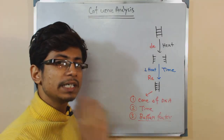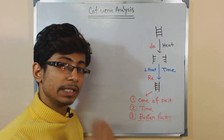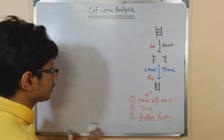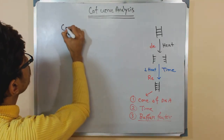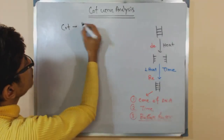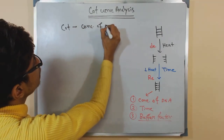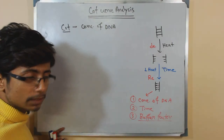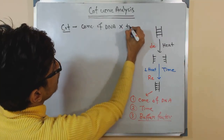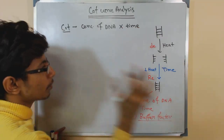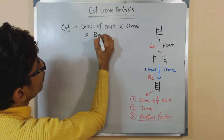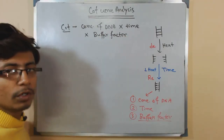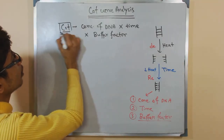These three things regulate the renaturation of DNA after heat denaturation. For the cot curve, the cot value is simply the concentration of DNA multiplied by the time provided for renaturation, multiplied by the buffer factor. That is the value for cot.